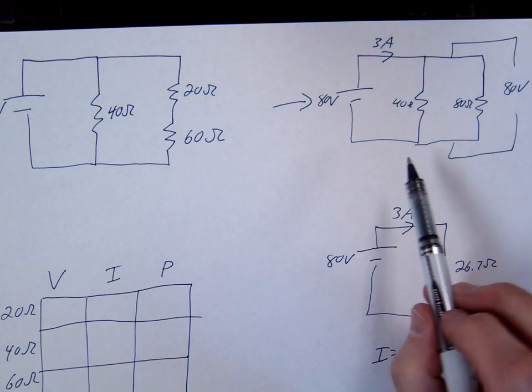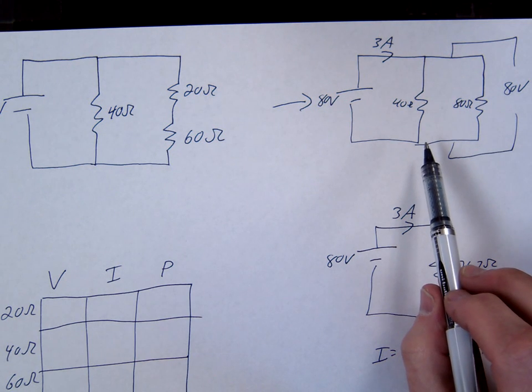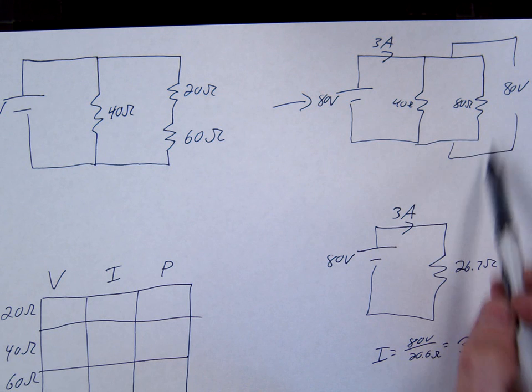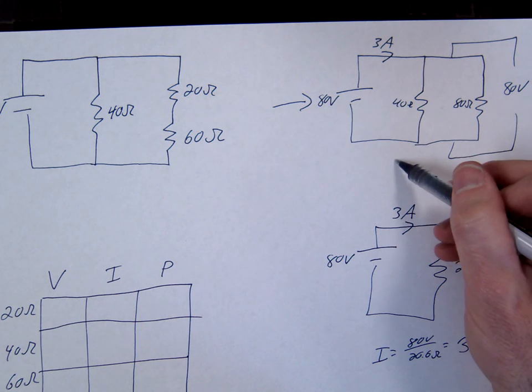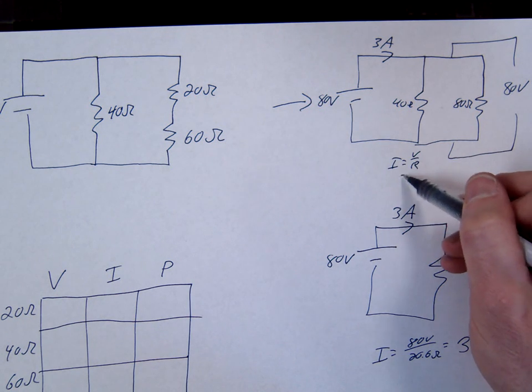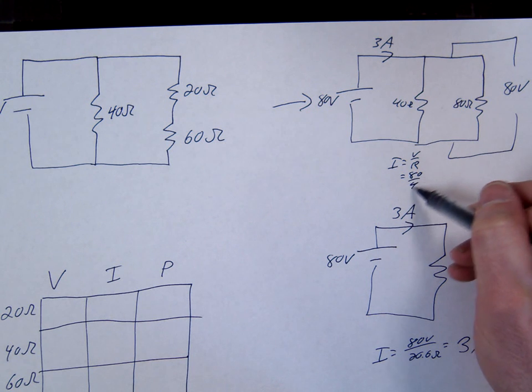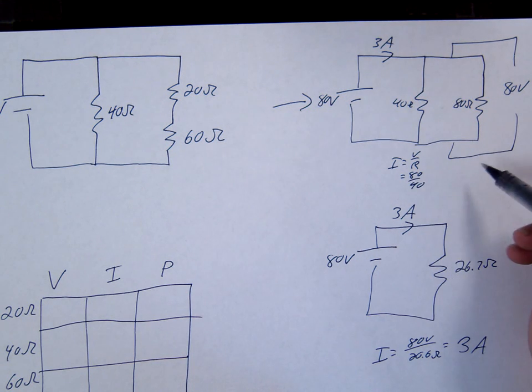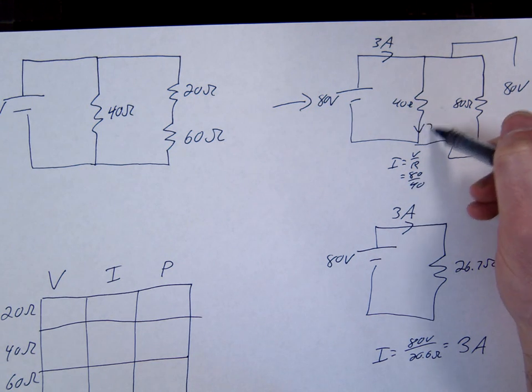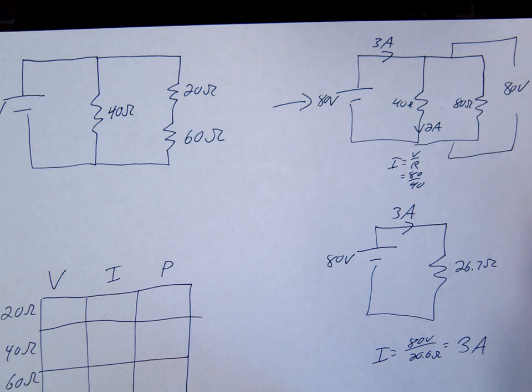So what are we missing on this circuit? The current through each branch. So now we're going to use Ohm's Law. I equals V over R. We're going to go 80 divided by 40. So 2 amps through this branch. We're going to go 80 divided by 80. 1 amp through that branch.